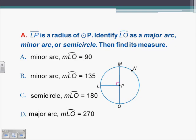If LP is a radius of circle P, identify arc LO as a major arc, minor arc, or semicircle, then find its measure. Going from L to O around the circle, since that is less than 180 degrees, it's a minor arc. Since angle MPL is 90, angle LPO is also 90. Arc measure always equals the corresponding central angle measure, so arc LO equals 90 degrees. The answer is A.